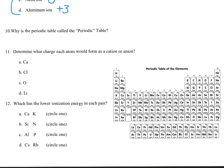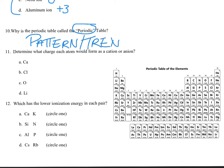Why is the periodic table called the periodic table? The word 'periodic' refers to a pattern or trend. The periodic table is full of patterns and trends — otherwise it'd just be a list of elements in alphabetical order. Instead, elements are arranged by different trends and patterns.